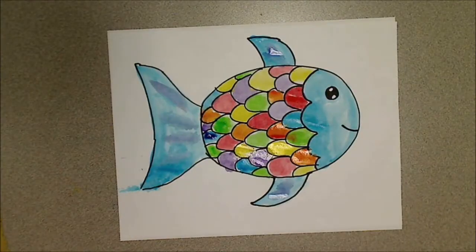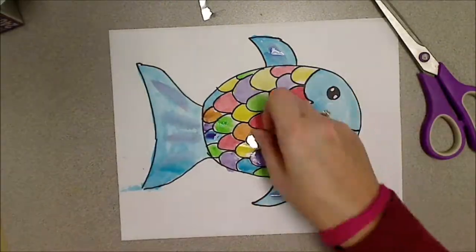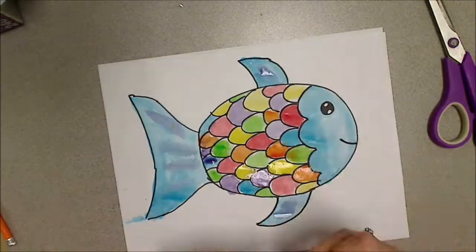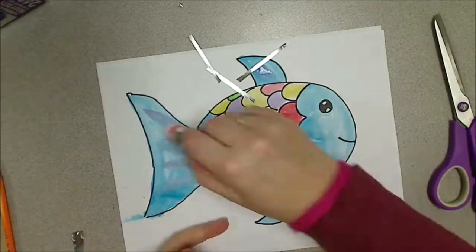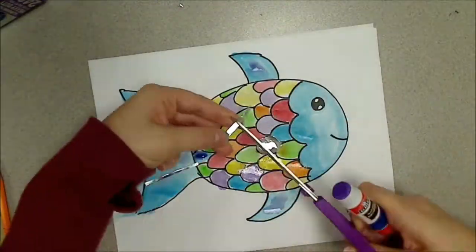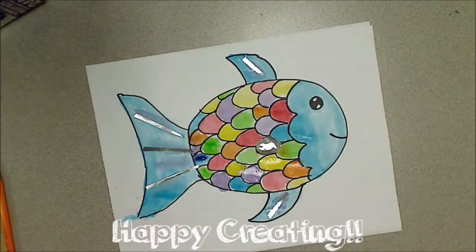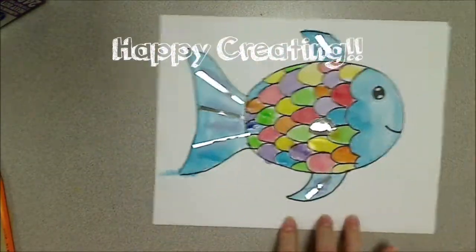Then I am ready for some tinfoil. This is the stuff you use in the kitchen. Cut a small piece and glue it on for your scale. And cut some little tiny strips to go in your fins and tail. Happy creating!